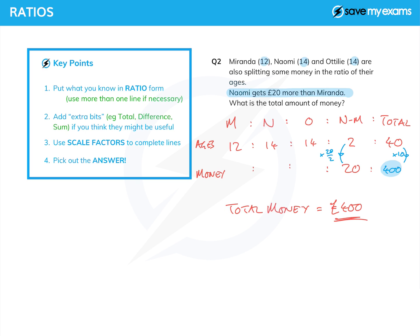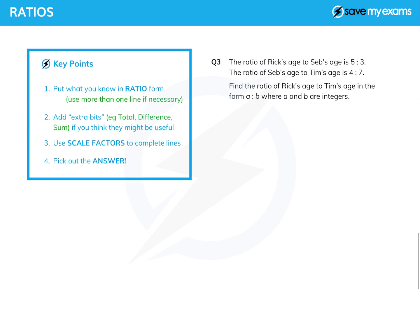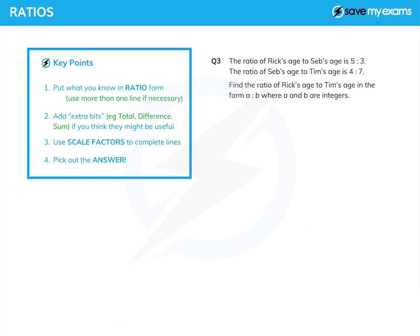I'm going to do one more question, slightly different, a classic age-type question. The ratio of Rick's age to Seb's age is 5 to 3, and Seb's age to Tim's age is 4 to 7, and we're asked to find the ratio of Rick to Tim. Okay, well let's start doing this. So Rick to Seb to Tim, well what do we know?